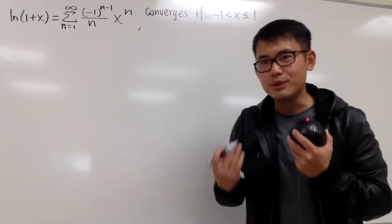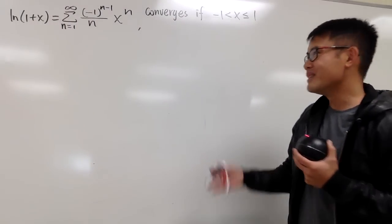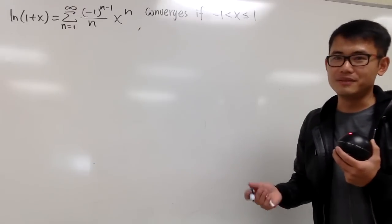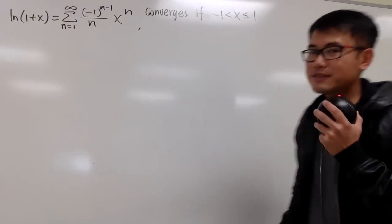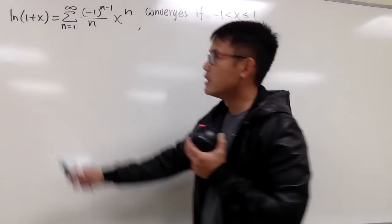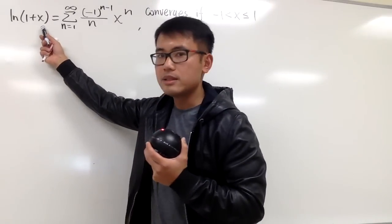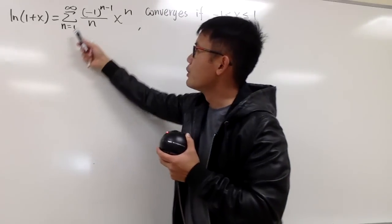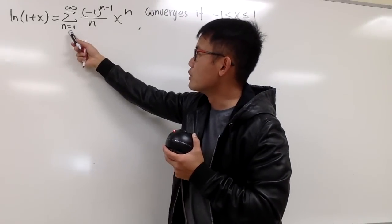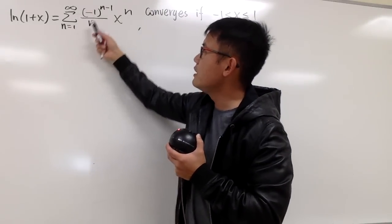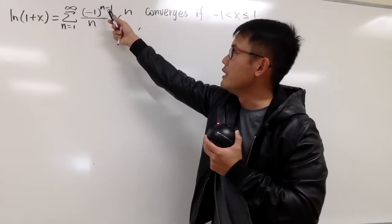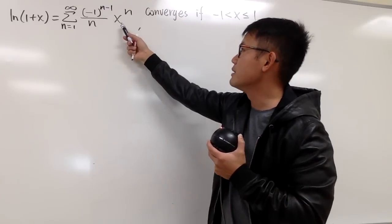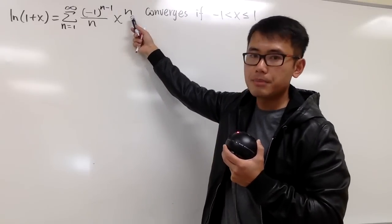We will also have to use some complex numbers, so there's some complex analysis involved. Let's first recall that ln of 1 plus x, where x is a real number, is equal to the sum when n goes from 1 to infinity of negative 1 raised to the n minus 1 power over n, times x to the nth power.